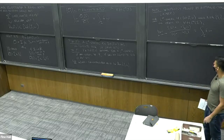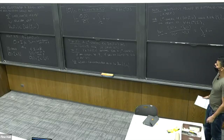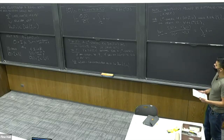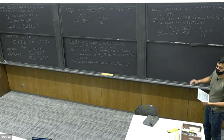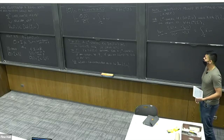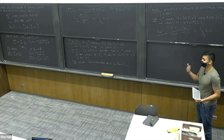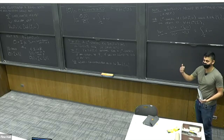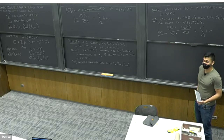Regarding ergodic density: that's about equidistribution of a single orbit which is going to be non-closed, so it's slightly different, I would say. But it's a similar principle — an average of an orbit converging to the integral over the whole space.